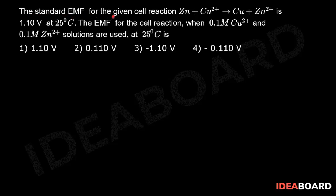The standard EMF for the given cell reaction Zn plus Cu²⁺ gives Cu plus Zn²⁺ is 1.10 volt at 25 degrees Celsius. The EMF for the cell reaction when 0.1 molar Cu²⁺ and 0.1 molar Zn²⁺ solutions are used at 25 degrees Celsius is.